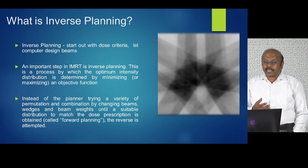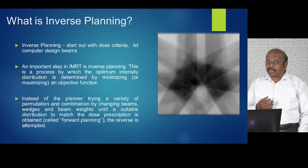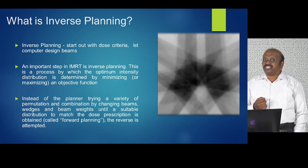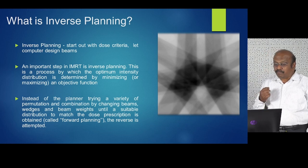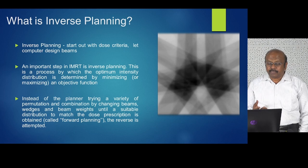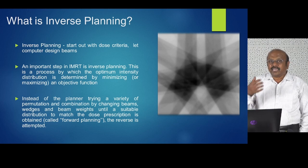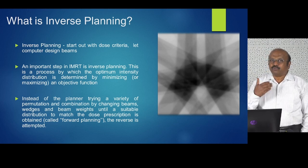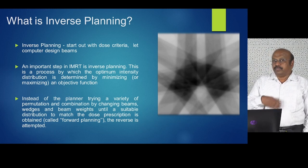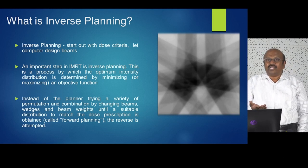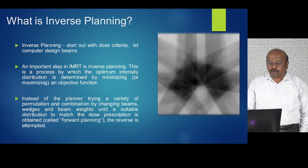An important step in IMRT is inverse planning. This is a process by which the optimum intensity distribution is determined by minimizing a cost function or objective function. Instead of the planner trying various permutations by changing beam weights, beam angle, beam size, and energy, the computer will use trial-and-error or iterative methods to arrive at the desired dose distribution. That is why it's called the inverse problem, as opposed to forward planning where you decide the beam, angle, and weightage.